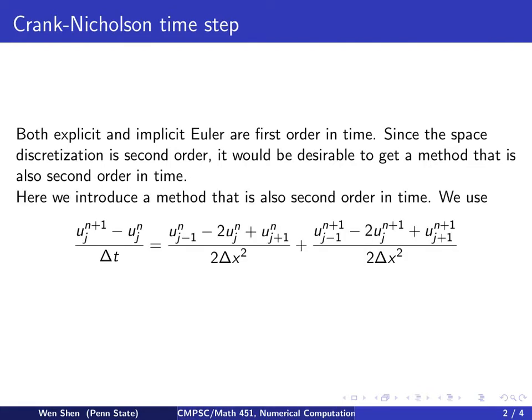We now introduce a method that is also second order in time. So how can we do this? The thinking behind was to think that we're now going to approximate the derivatives at the point at TN plus half and XJ. So at that point,